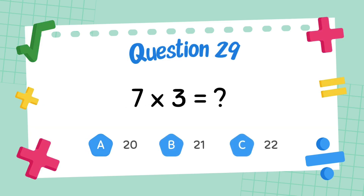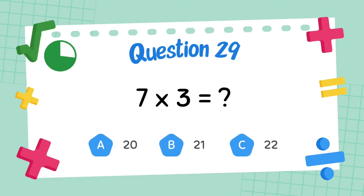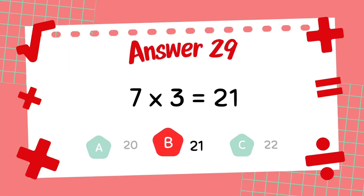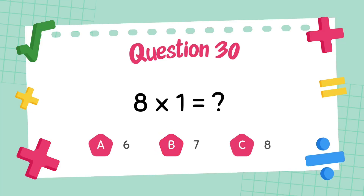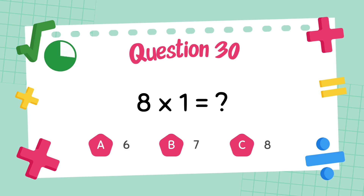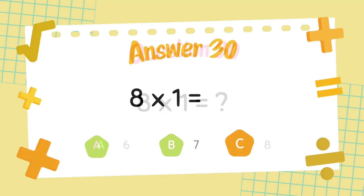What is 7 multiply 3? The answer is 21. What is 8 multiply 1? The answer is 8.